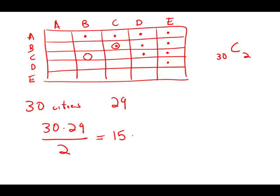So that is 15 times 29, canceling the 2. And that simplifies a little multiplication to 435. And this is answer choice B.